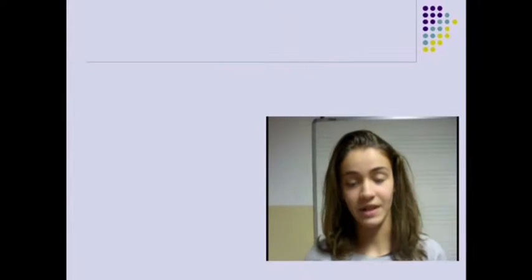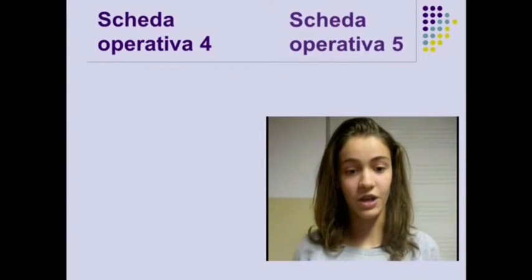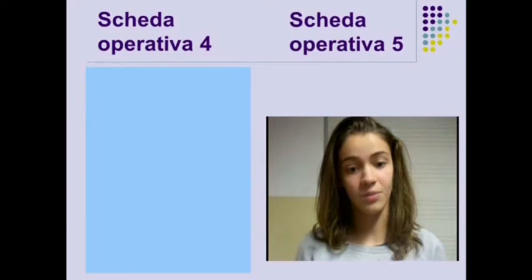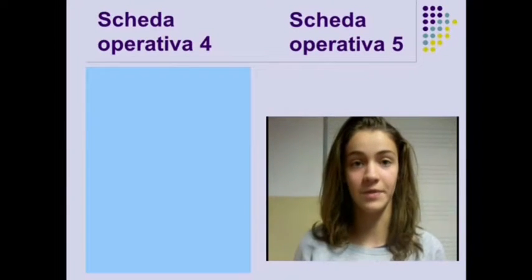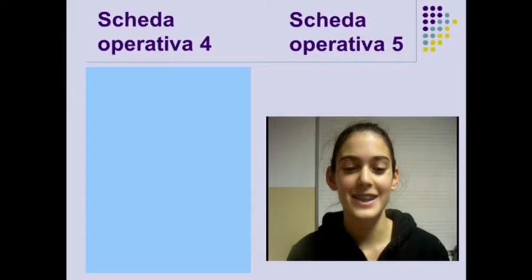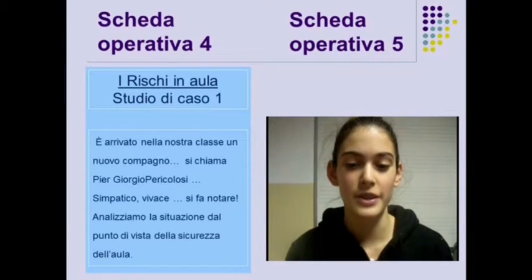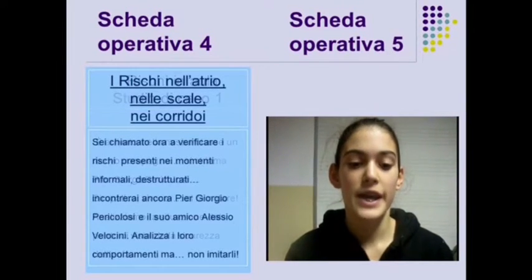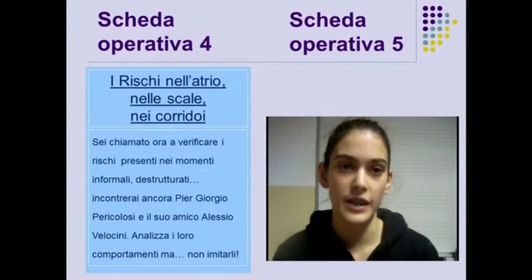Attraverso la scheda operativa 4 e 5 focalizziamo la nostra attenzione sui nostri atteggiamenti e comportamenti, in rapporto al luogo in cui ci troviamo. Nella scheda 4 verifichiamo i comportamenti in aula di Pier Giorgio, pericolosi, e nella scheda 5 gli atteggiamenti nei luoghi comuni: atrio, corridoi e scale.